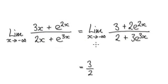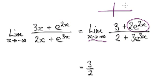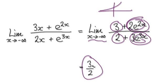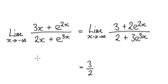Now, as x tends to negative infinity, if you look at this term, it's going to head towards 0. This term here is also going to head towards 0. So you've got 3 plus 0 over 2 plus 0, which heads towards 3 over 2. So that's your horizontal asymptote.